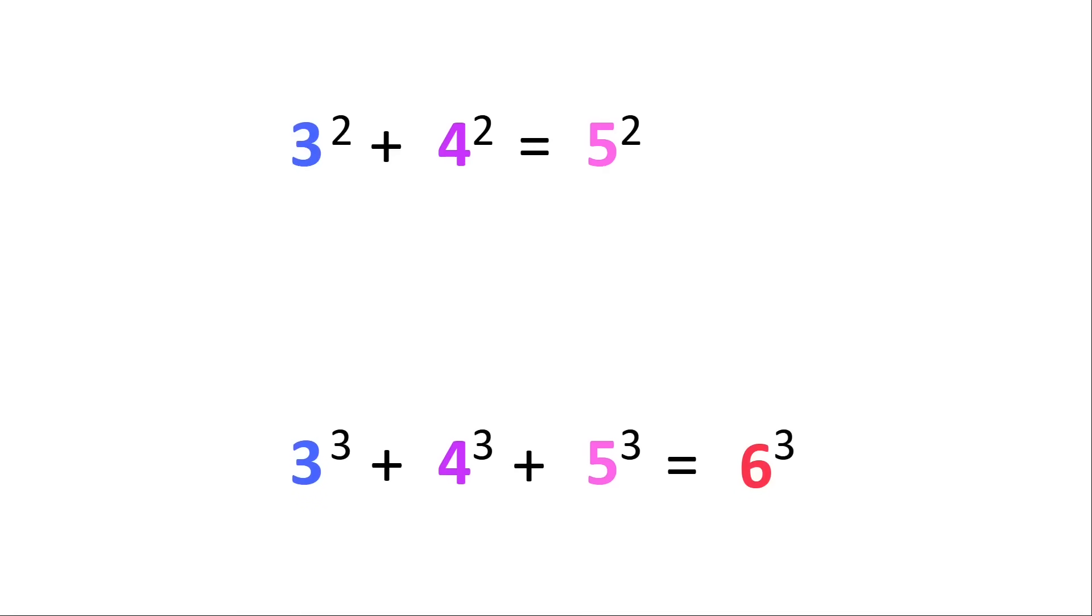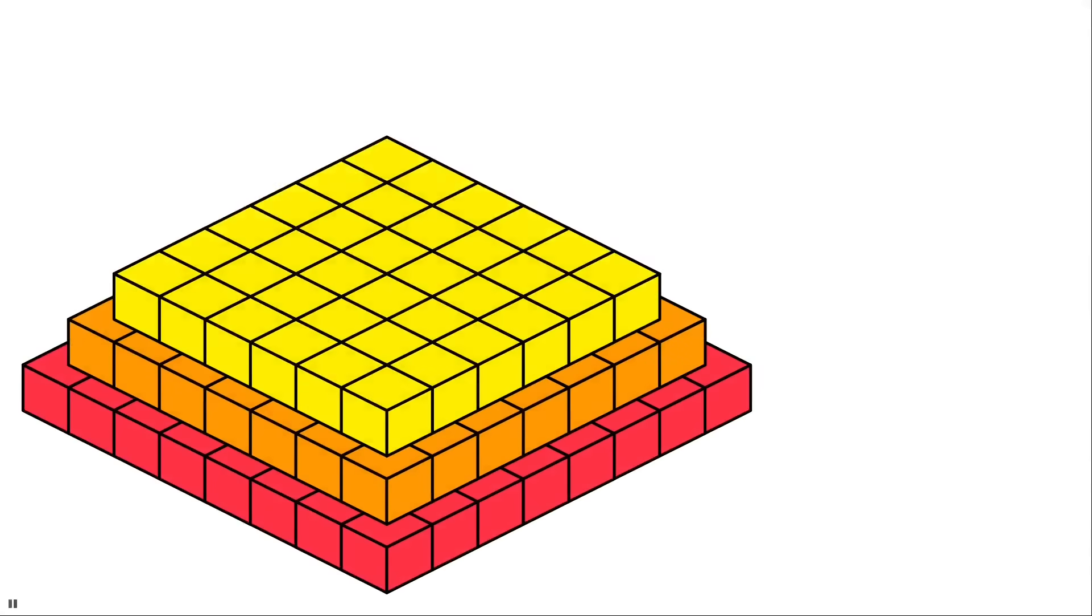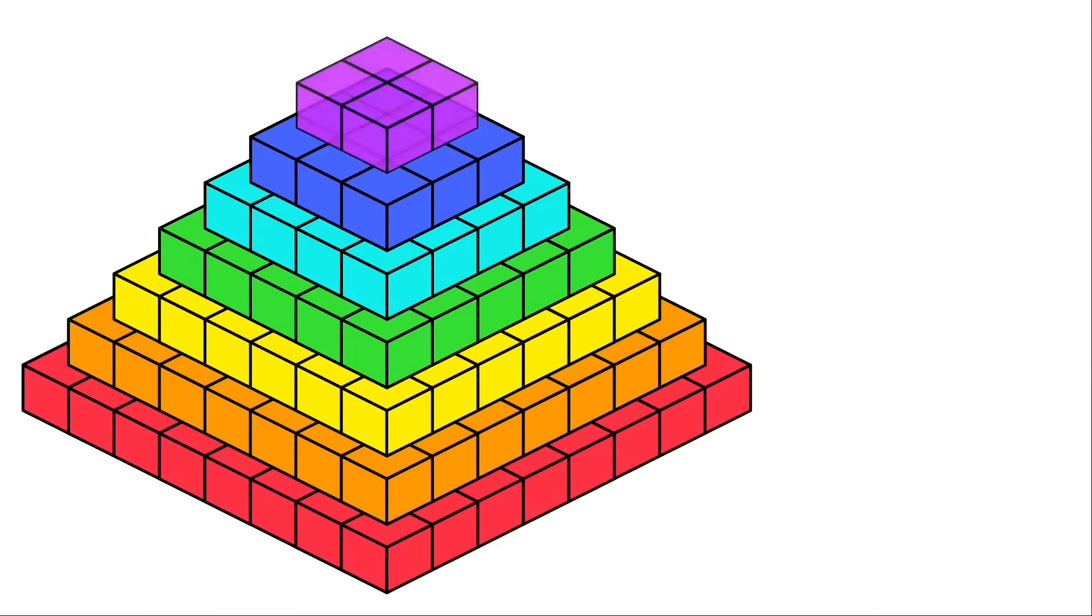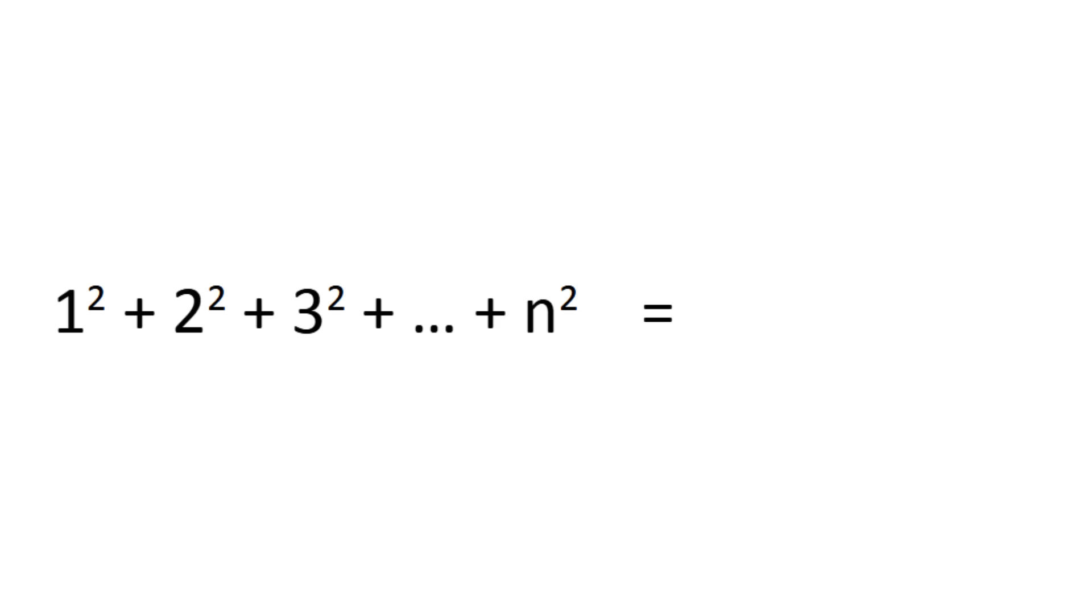There's an interesting problem along these lines called the cannonball problem. Basically, is there a number of cannonballs where you can arrange them in both a square pyramid and a flat square? This means you have to find a number n, where the sum of squares from 1 to n is itself a square.